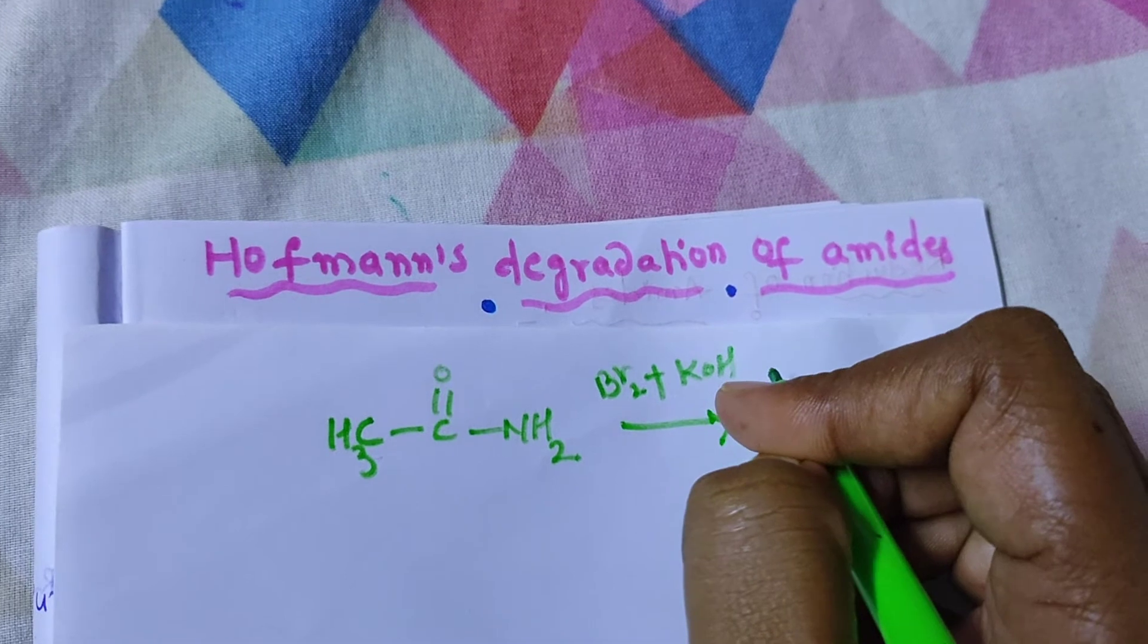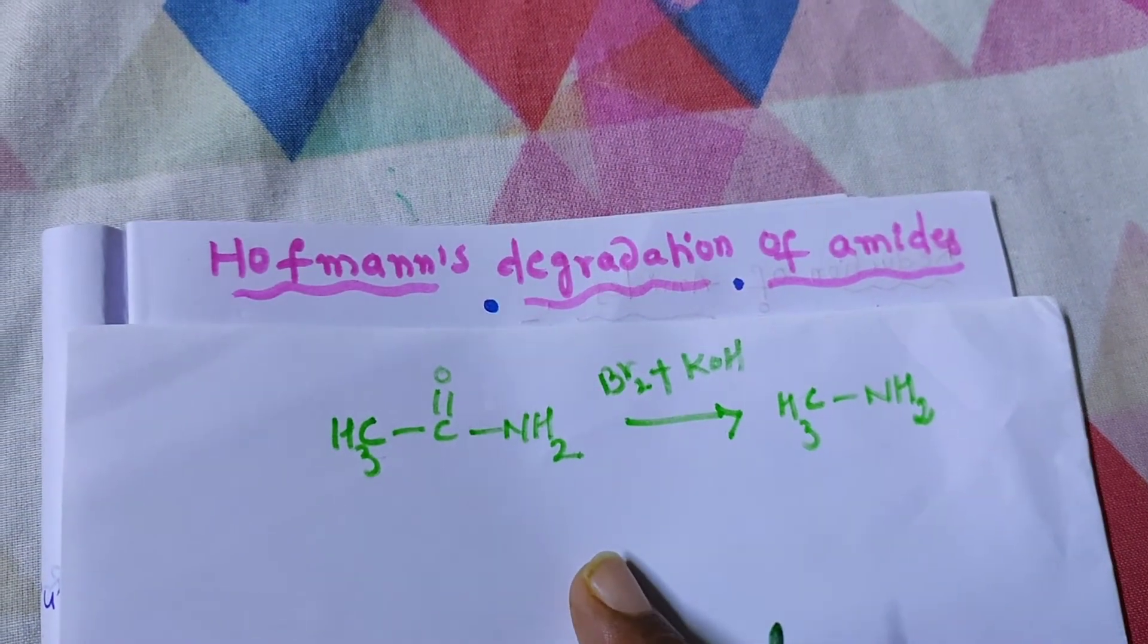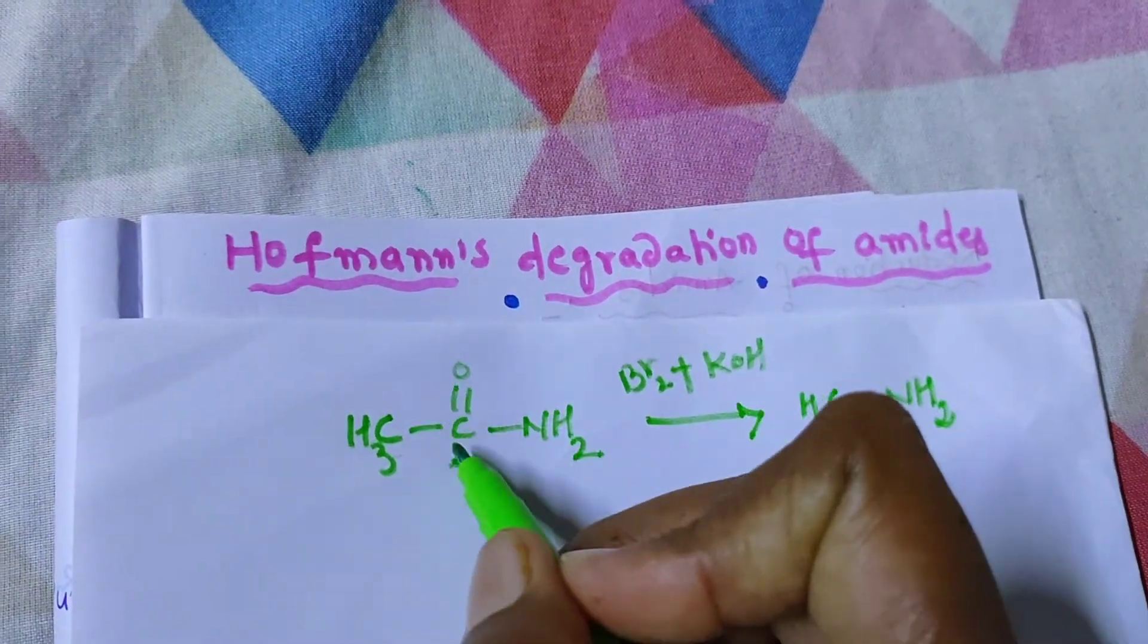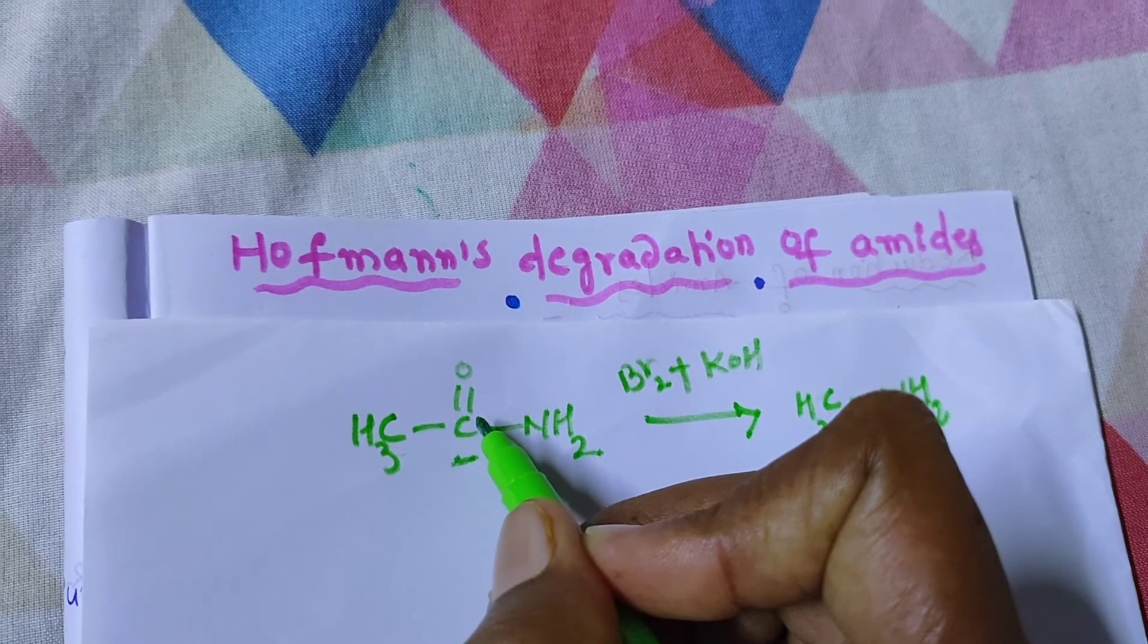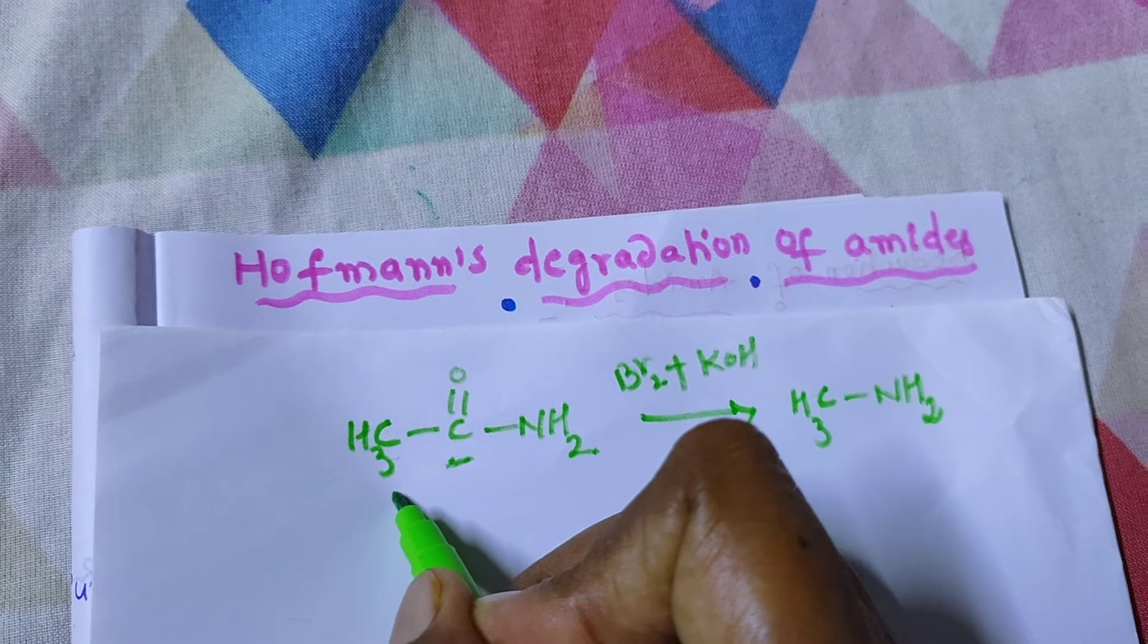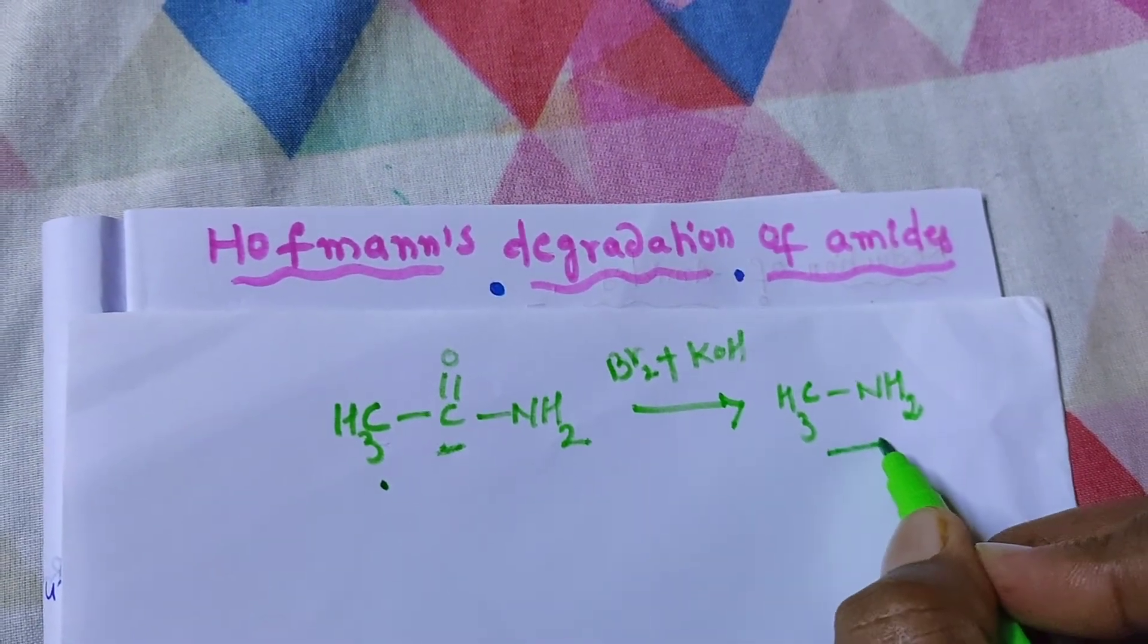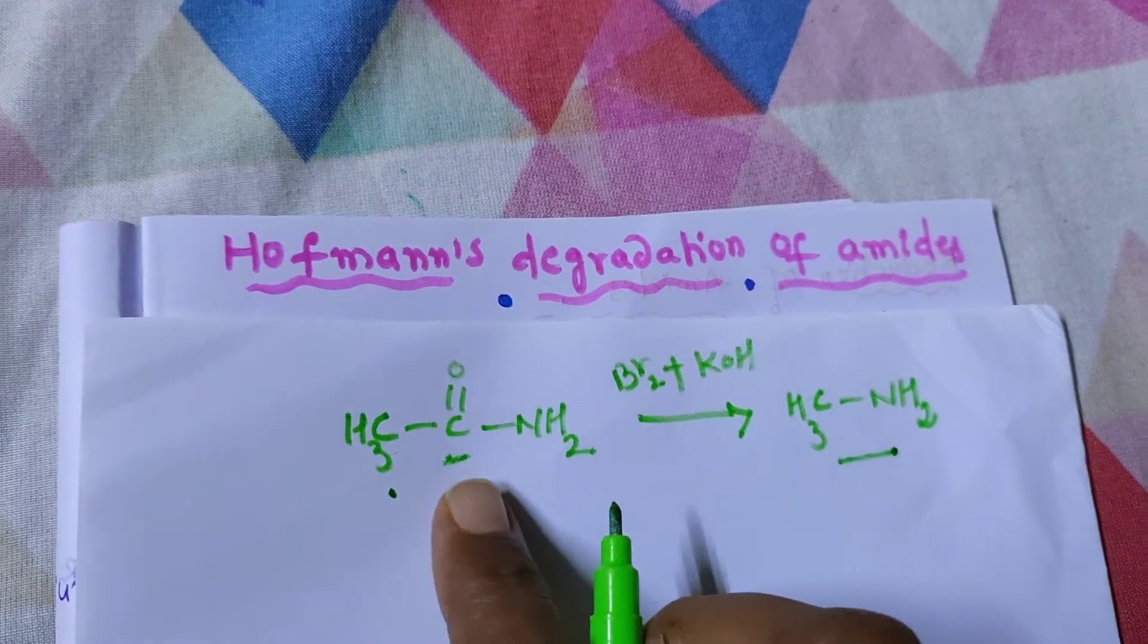I am using KOH here. What product will we get in this reaction? In this reaction, you need to get rid of this carbonyl. You are going to add the CH3 group along with the NH2. We get CH3NH2.